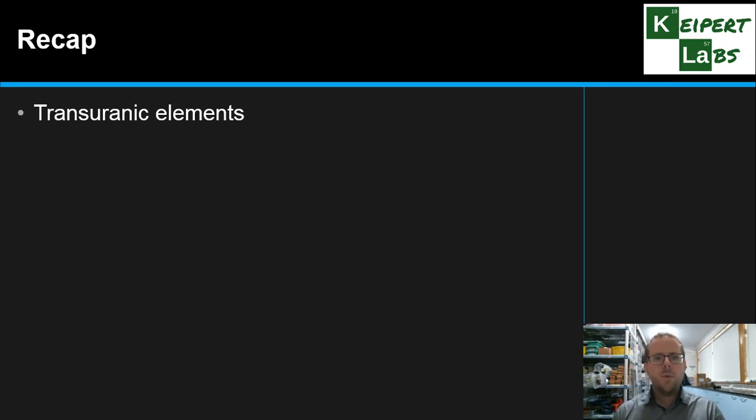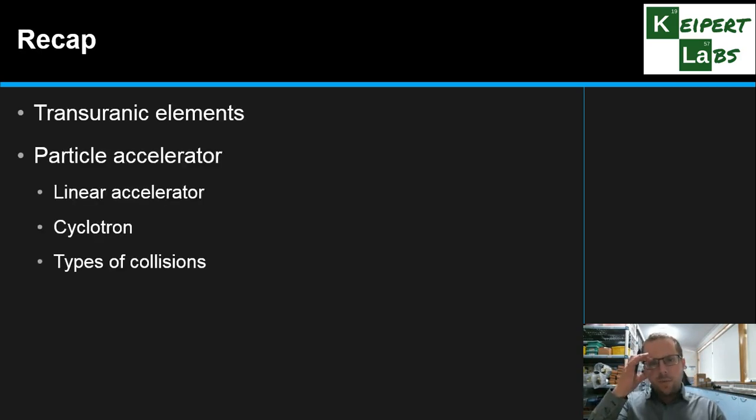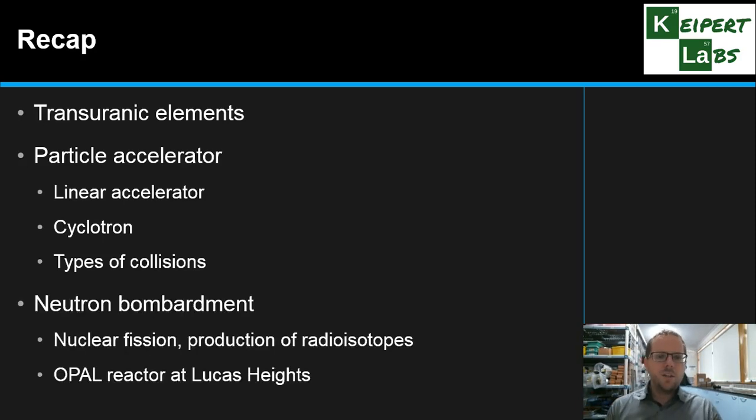So we identified what we mean by transuranic elements. We talked about that there's two ways to produce them, using a particle accelerator and using neutron bombardment. Particle accelerators to overcome the repulsion of the positive projectiles from the nucleus of our targets. We can have them in a straight line. We can have them in a cyclotron, which is circular. And we have a range of different types of collisions that we can do. Protons, alpha particles, and small nuclei. Or we can use neutrons to bombard target atoms to either produce radioisotopes or cause nuclear fission. And one such facility is at the Opal Reactor at Lucas Heights. Thanks very much for watching. Bye for now.